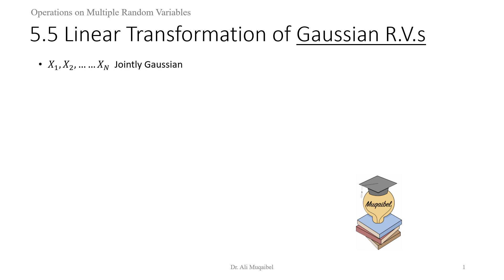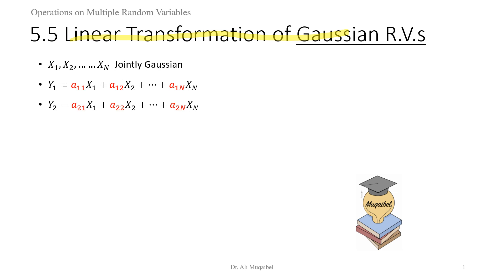We know that the PDF is jointly Gaussian. Our job is to find the joint PDF for the linear transformation. Linear transformation means the output is related to the input through a linear equation. We have multiple output functions Y1, Y2, up to Y sub-N.